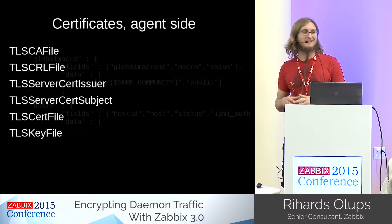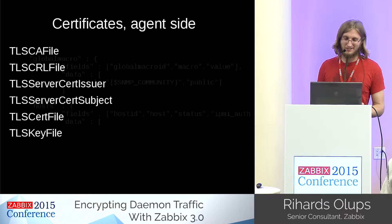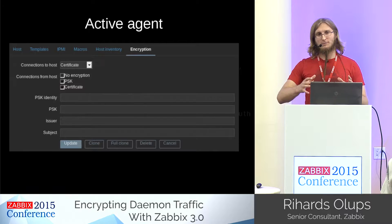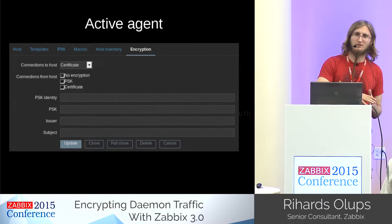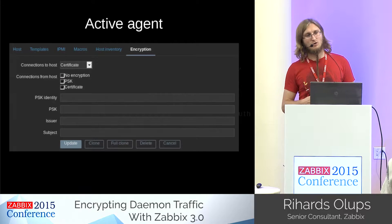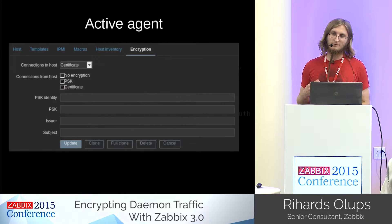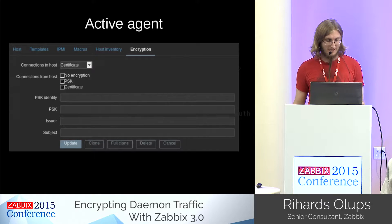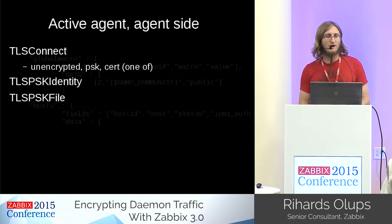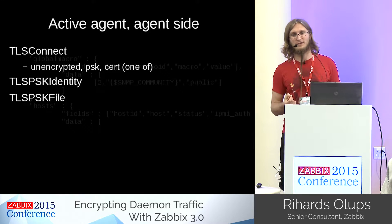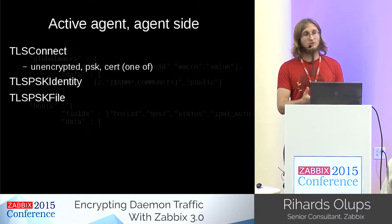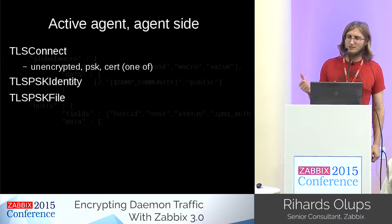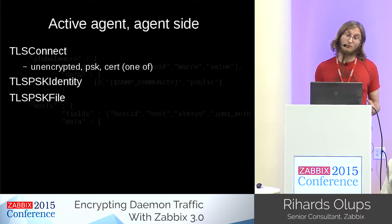You must also have the actual certificates and CA files in place, but that's a separate topic. For the active agent — the agent connecting to the server — encryption is supported as well. In the host properties you can select one or more methods for securing the connection. In the agent configuration file there's a parameter TLSConnect where you specify only a single method: unencrypted, pre-shared key, or certificate.